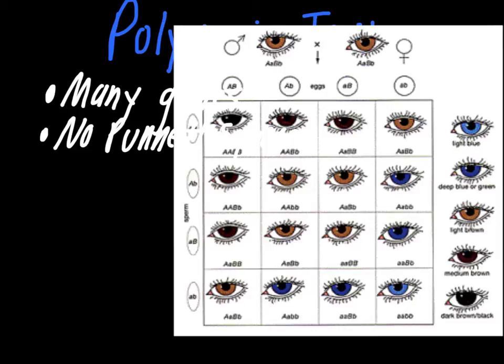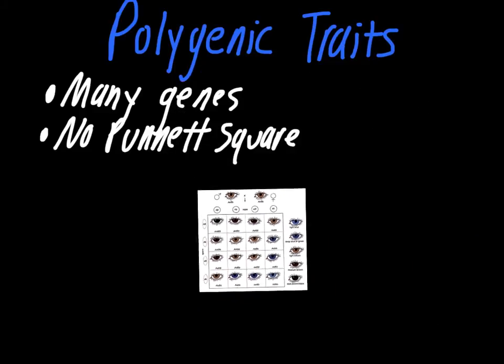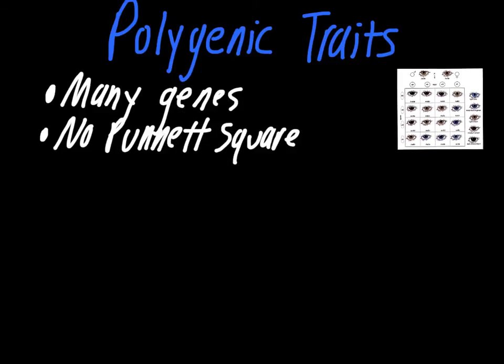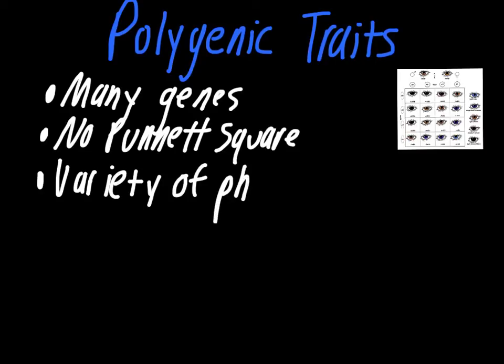An important thing to note about polygenic traits is that there's always a wide variety of phenotypes. As you can see from the chart, there are many different options for eye color. Since these traits are controlled by many genes, there are a lot more different combinations that could potentially play out to determine your phenotype, and because of that you get a tremendous variety.